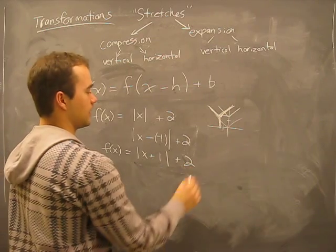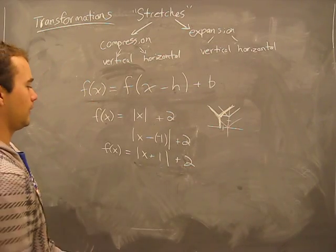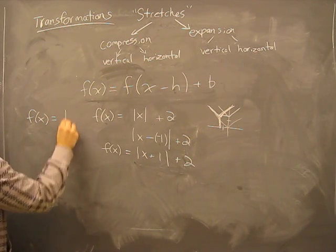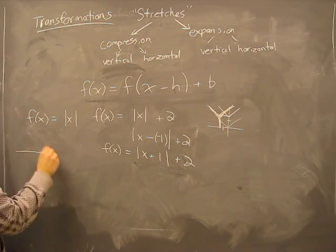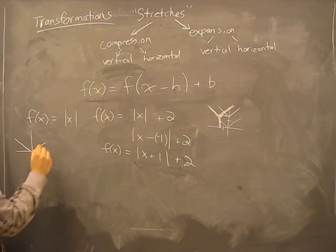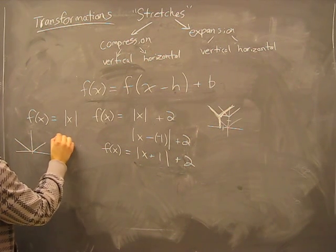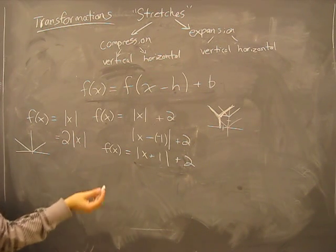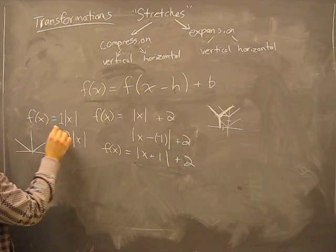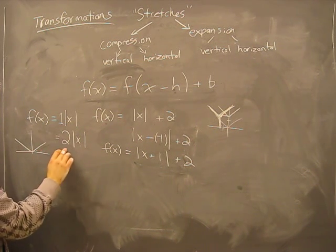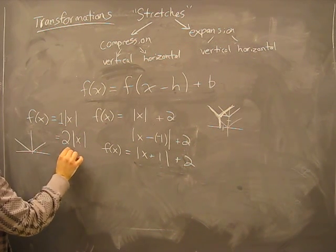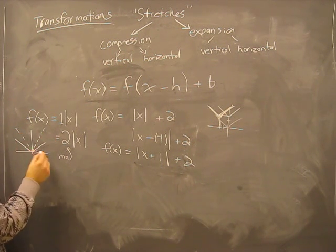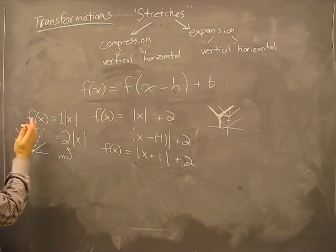Easy as pi. How do these stretches fit in? Just like before when we had f of x equal absolute value of x was a graph like this, but if I change it to be two times the absolute value of x, then it was like the slope, right? There's a slope of one on this line. Now our m is two, our slope is two, so it makes it twice as steep.